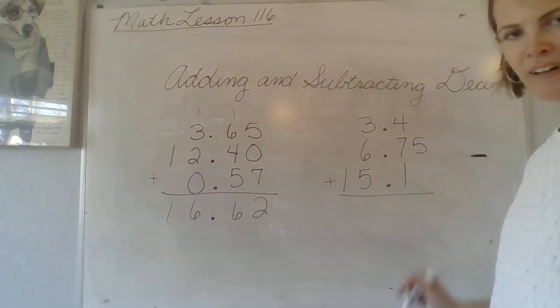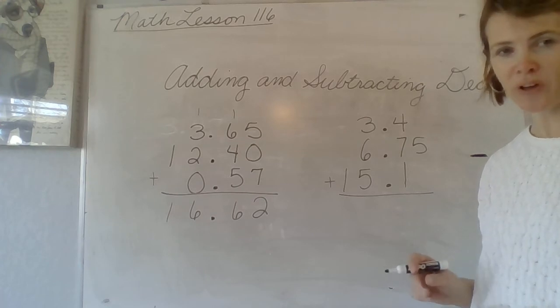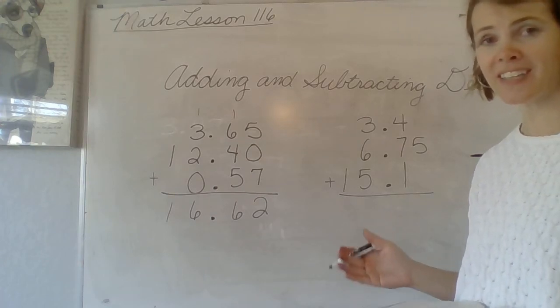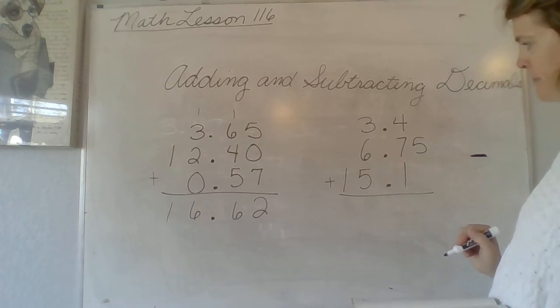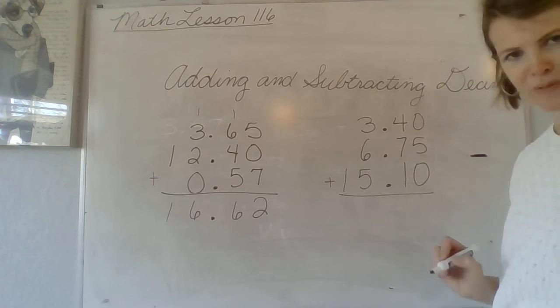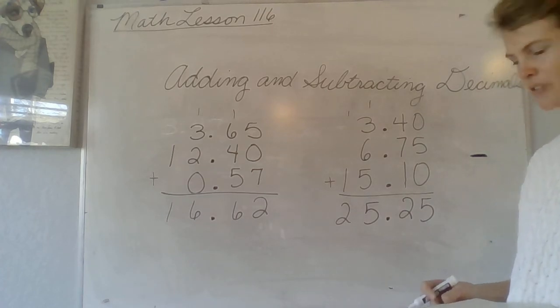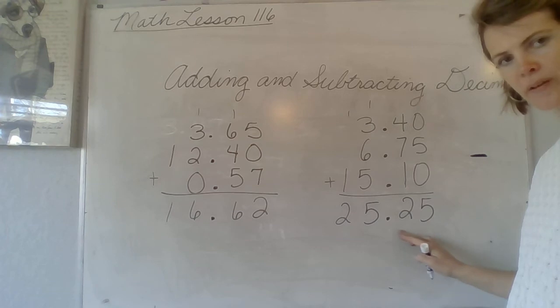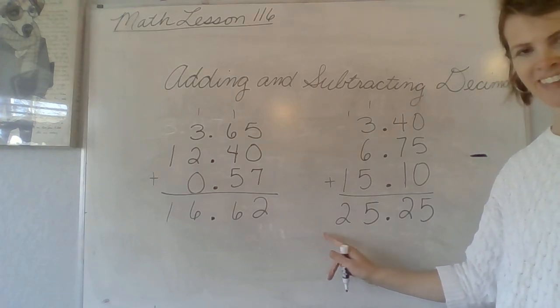Copy this one down now. Erase your board and copy it down. Next thing to do after you copy it down is to fill in your 0's. Where should I put some 0's in here? Right here. And right here, it needed two 0's. Now go ahead and add. And then check back. All right, if you added correctly, you should have 25 and 25 hundredths. No dollar sign because it's not money.